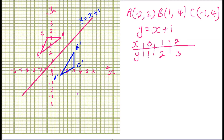For the negative quarter turn about the origin, A prime maps to (-1, -1) — that is A double prime. For B double prime, we interchange the coordinates to get (2, 3). C double prime lands on (0, 3). When we join the three points we get triangle ABC double prime.